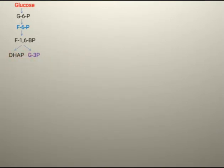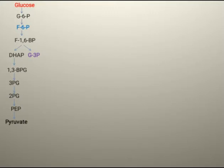From fructose 6-phosphate we get fructose 1,6-bisphosphate, and from fructose 1,6-bisphosphate we get two compounds: dihydroxyacetone phosphate and glyceraldehyde 3-phosphate. These convert into 1,3-bisphosphoglycerate, then 3-phosphoglycerate, 2-phosphoglycerate, phosphoenolpyruvate, and finally pyruvate in glycolysis.